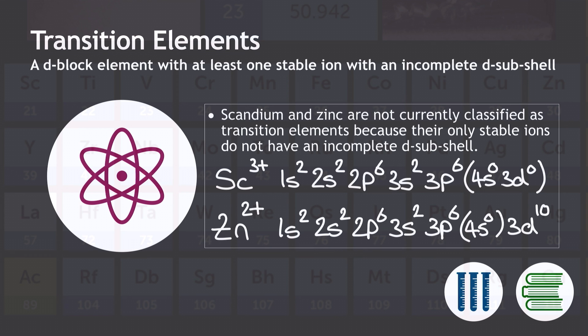Not all elements in the D-block are classified as transition elements. As part of the OCR-A A-level in chemistry, you need to be aware that scandium and zinc are not currently classified as transition elements, and that's because their only stable ions, that's scandium 3 plus and zinc 2 plus, do not actually have incomplete D-subshells, as you can see from the configurations shown on screen.